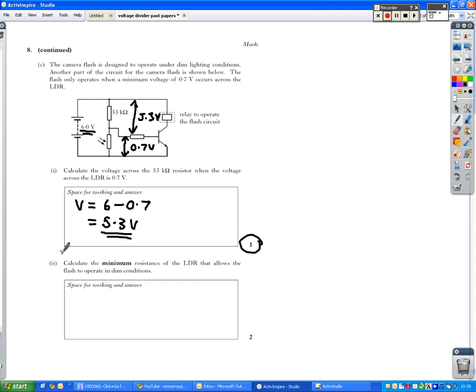Calculate the minimum resistance of the LDR that allows the flash to operate in dim conditions. So here, we've got to use one of the equations that I highlighted earlier. So this is applying the voltage divider knowledge and the knowledge of those equations to a real-life situation. So we look at what we have, first of all. We've got the supply voltage, so we've got Vs over here.